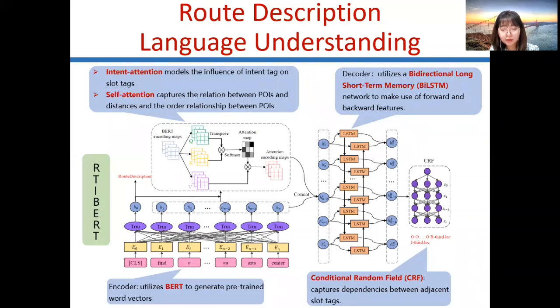We utilize a bidirectional long-short-term memory network as decoder to make use of forward and backward features. Besides, we incorporate conditional random field to capture dependencies between adjacent slot tags.